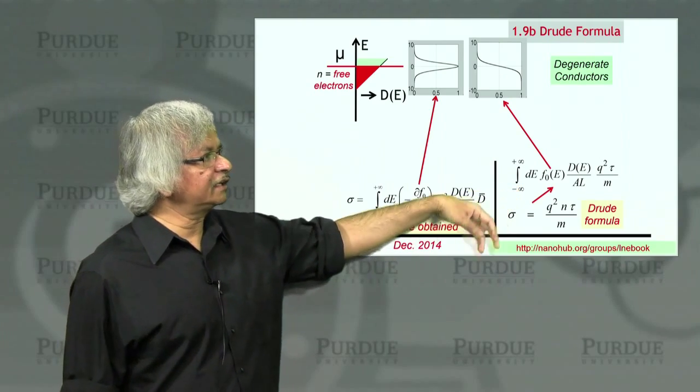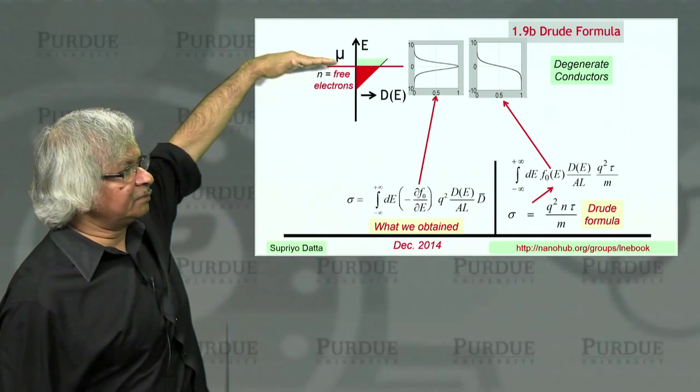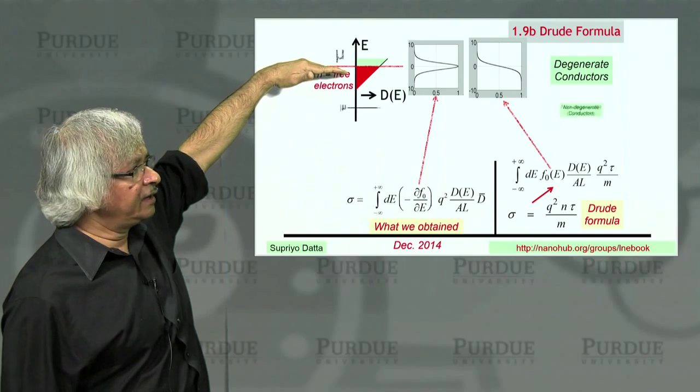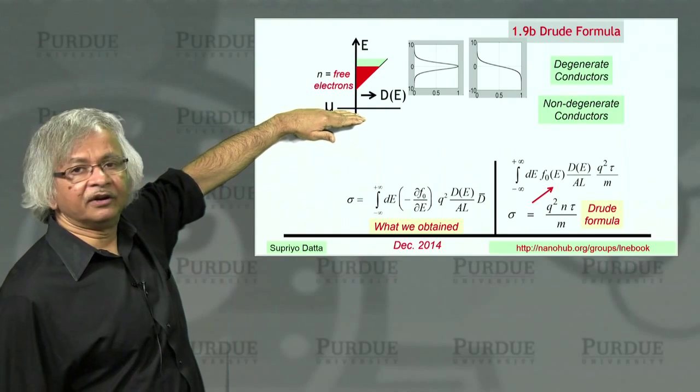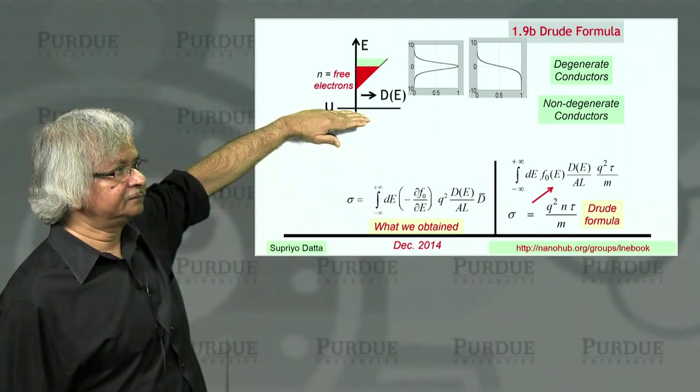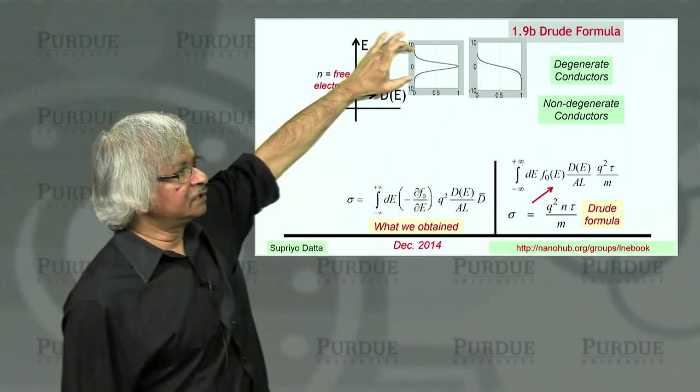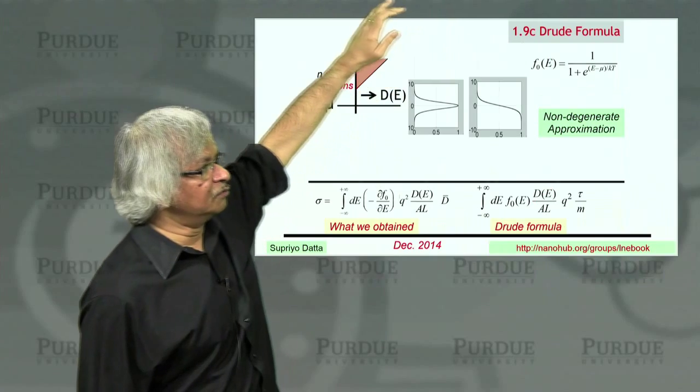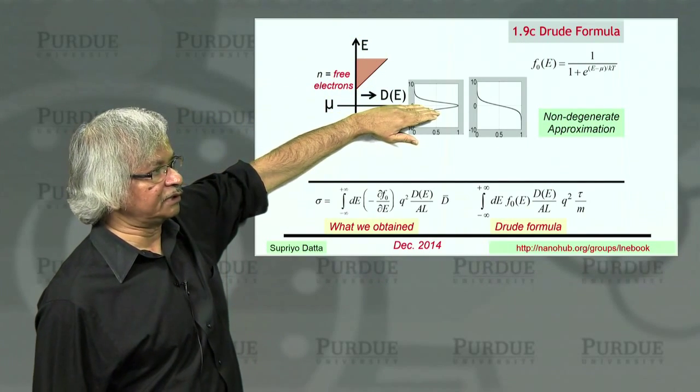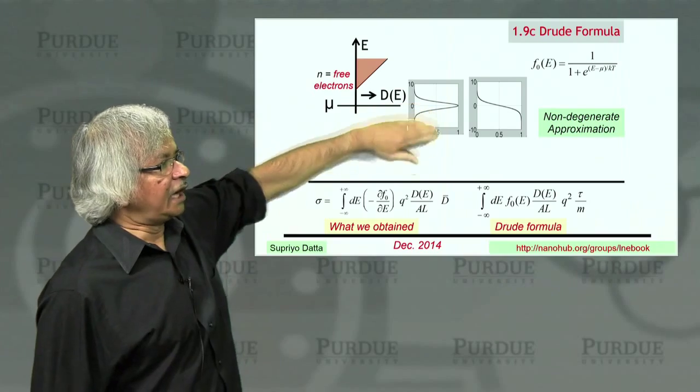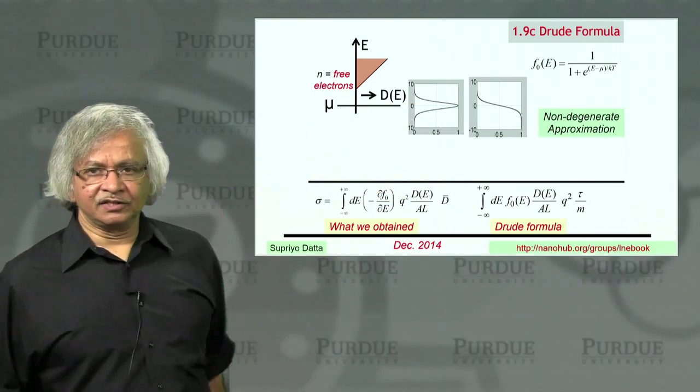So what's a non-degenerate conductor? Well, it means that the chemical potential, instead of being up here, is actually down somewhere here below the band. So if it's below the band, that means, of course, these functions are also moved down. So it's right around where the chemical potential is.